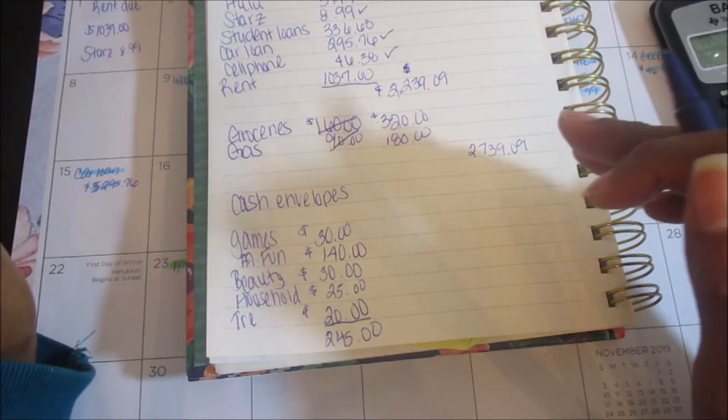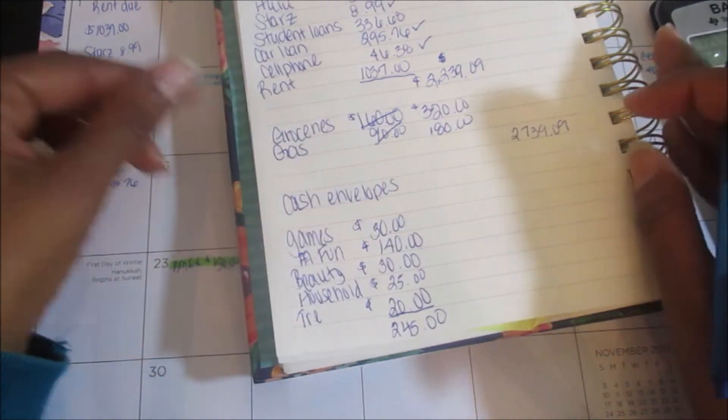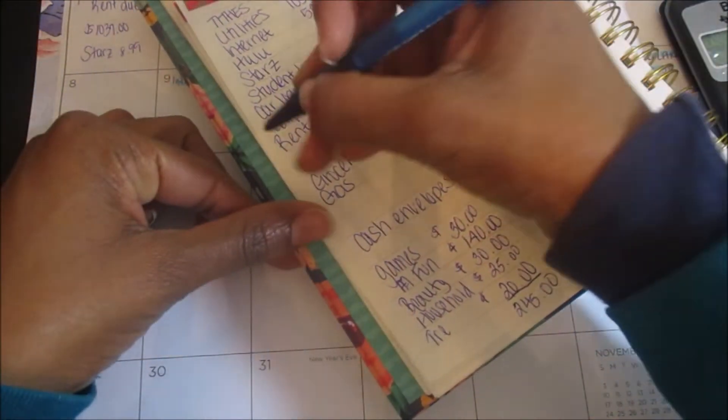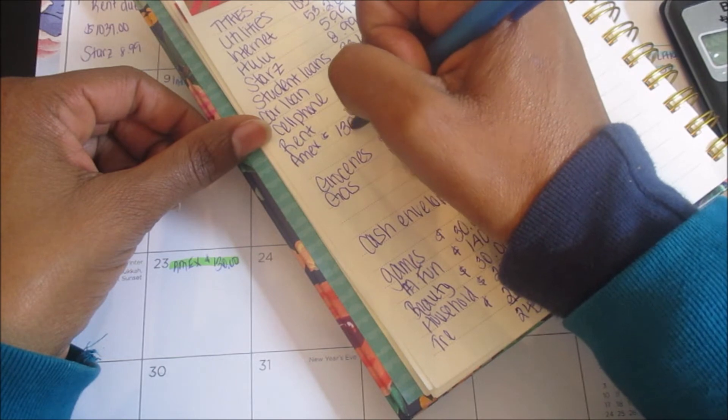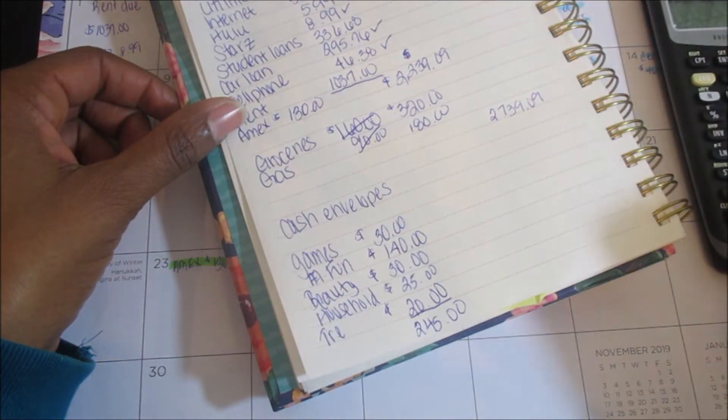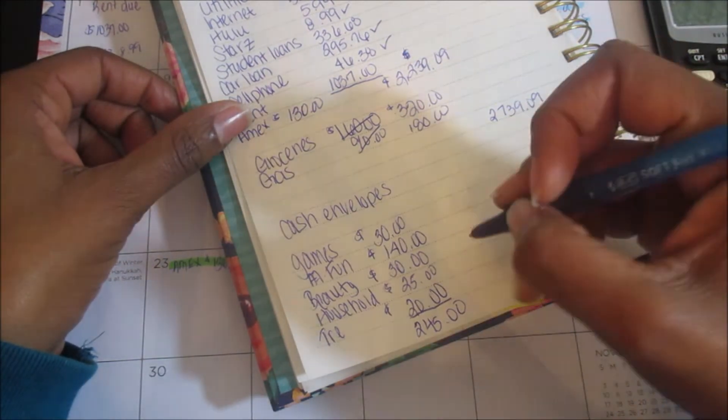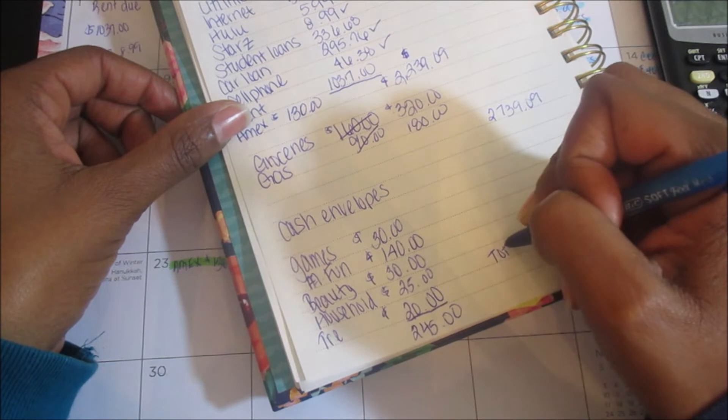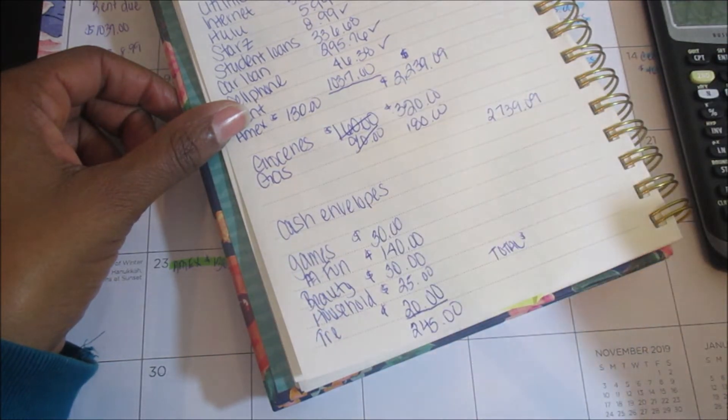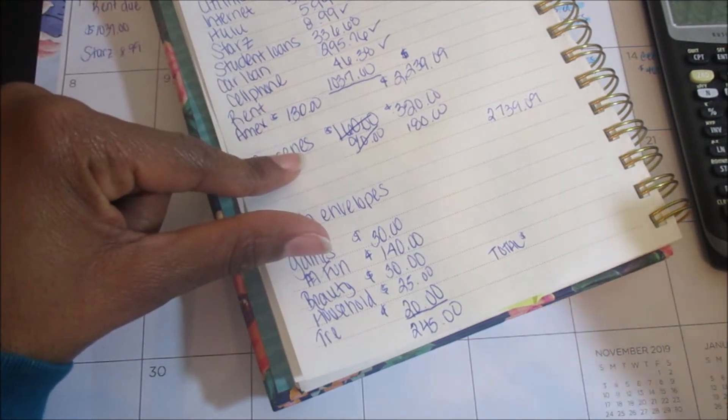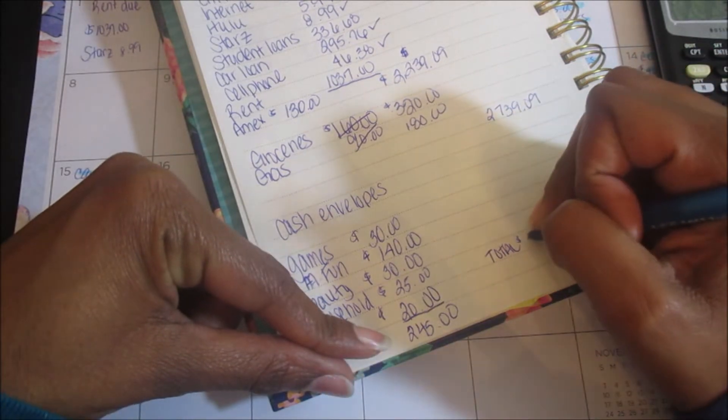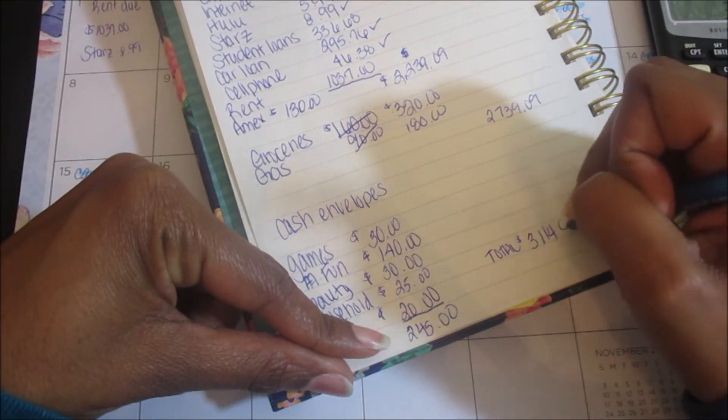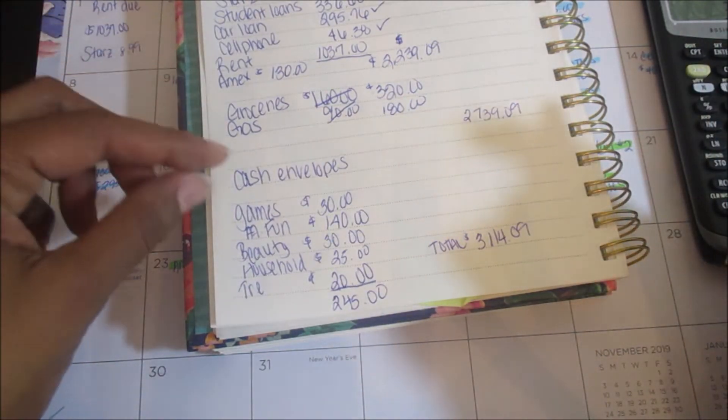And I think that is everything for the month. Oh, I forgot to put my American Express bill up there. I'm going to have to change this total. It was $130 so I'm going to have to change my amounts by $30, but I'll just put a total down here. So it will be $2,739 plus the $130 plus the $245. Alright, so that is all—this is included.